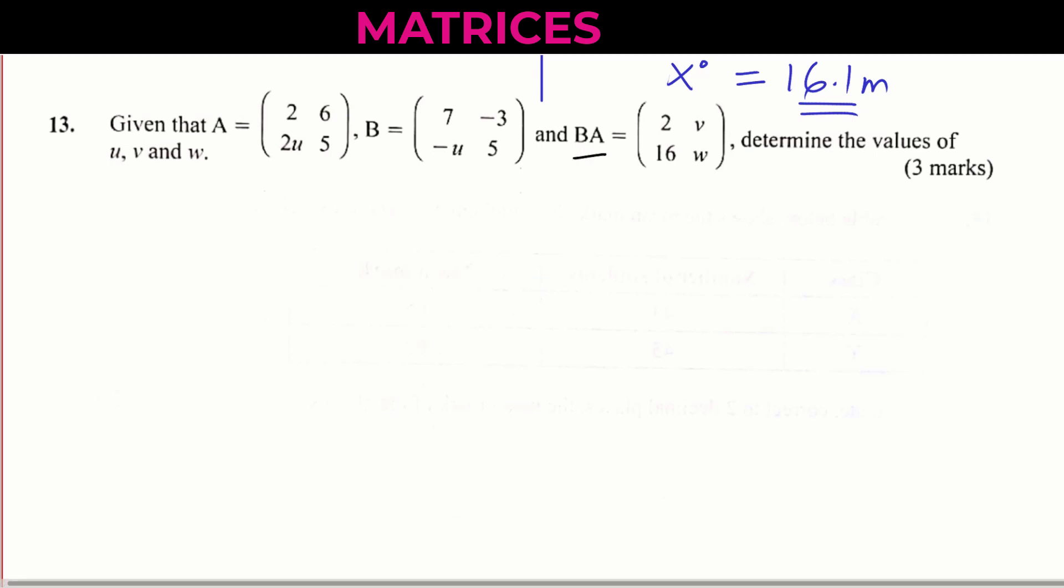BA means we take the matrix B, which is given by 7, negative U, negative 3 and 5, and we multiply that with the matrix A, which is 2, 2U, 6, 5.